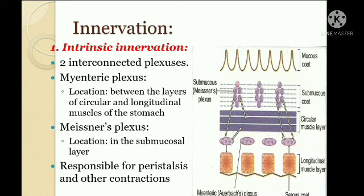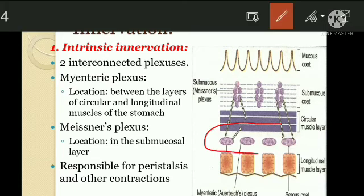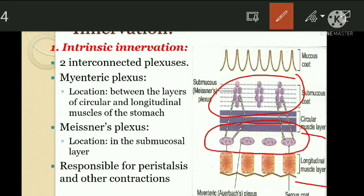Now, innervation of the stomach. Like elsewhere in the gut, the muscle layer includes extrinsic and intrinsic innervation. For intrinsic innervation, there are two interconnected plexuses: the myenteric plexus, located between the circular and longitudinal muscle layers, and Meissner's plexus, located in the submucosal layer. The intrinsic innervation is directly responsible for peristaltic activity and other contractions, and is continuous between the stomach and duodenum — peristalsis in the antrum influences the duodenal bulb.